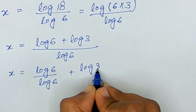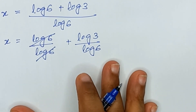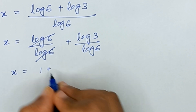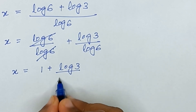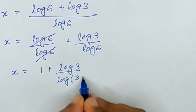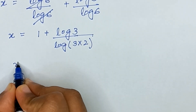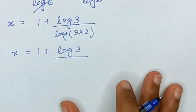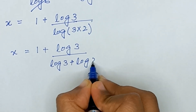log(6) divided by log(6) cancels to 1, so x equals 1 plus log(3)/log(6). Now log(6) can be written as log(3 × 2), and applying the product rule again gives log(3) + log(2). So x equals 1 plus log(3) divided by (log(3) + log(2)).